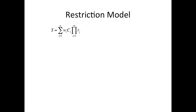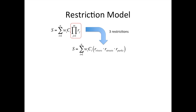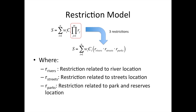Now let's focus on the restriction model. We're going to expand our equation for only three restrictions. We're going to work on restrictions for rivers, streets, and parks. This is going to create for us a boolean raster layer that will represent the restriction to develop a waste disposal site.